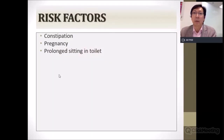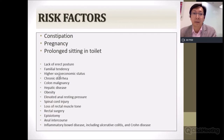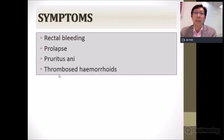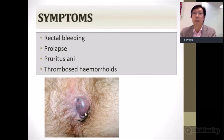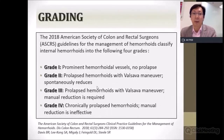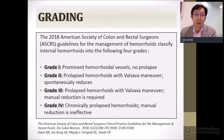Risk factors for hemorrhoids are very similar to varicose veins — constipation, pregnancy, prolonged sitting on the toilet, and a whole list of other associated factors. Symptoms include rectal bleeding, prolapse, pruritus ani, and thrombosed hemorrhoids. Thrombosed hemorrhoids present as a very tense, painful lump and patients normally come as an emergency. Grading runs from one to four, with one being least severe and four being the most severe — grade four means the prolapsed hemorrhoid cannot be reduced.